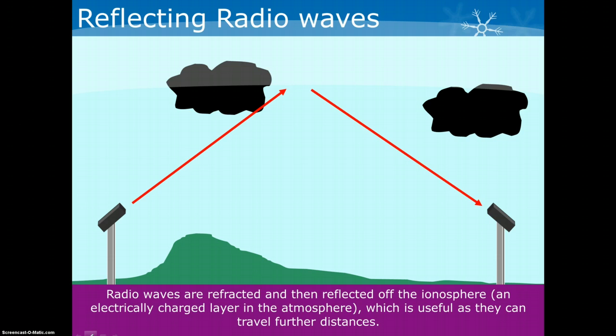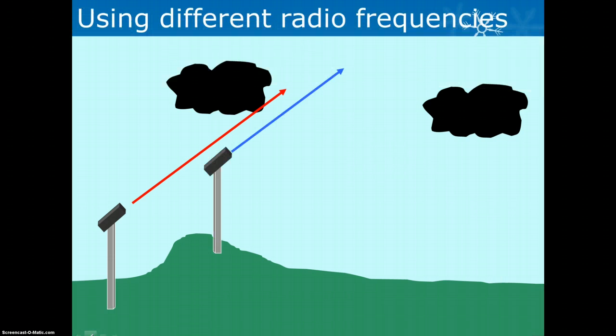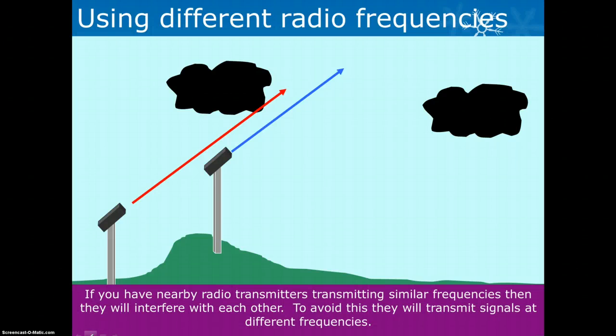Now if I have two radio transmitters that are geographically very close to each other, then there is potential for there to be interference. The signals could mix up with each other and I could end up with what I receive at the end being jumbled. So to stop that from happening, what we do is we send the two signals at different frequencies.